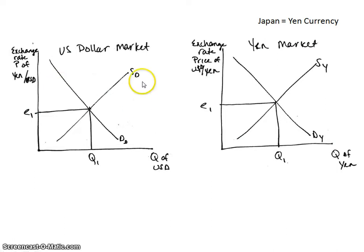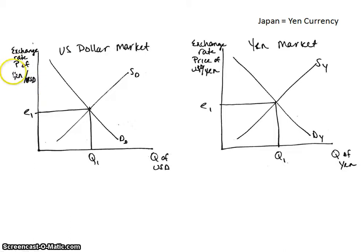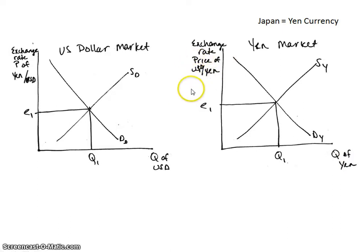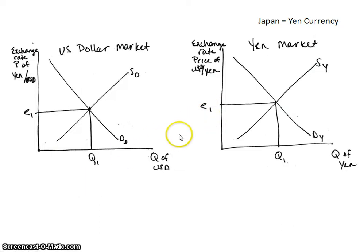Just to remind ourselves about the labeling: on the horizontal axis is the quantity of U.S. dollars, and for the exchange rate, remember that whatever is on your horizontal axis goes as the denominator in the exchange rate — so the price of yen per U.S. dollar. Yen is the currency for Japan, and since the quantity of yen is on the horizontal axis, the exchange rate is the price of U.S. dollars per yen. The supply uses a subscript D for the dollar, the demand has a subscript D, and Y is relative to the yen. You can use a lowercase e for the exchange rate and a Q for the quantity.